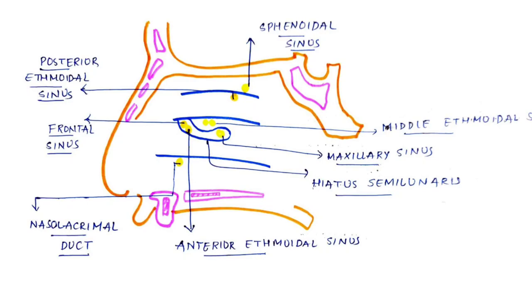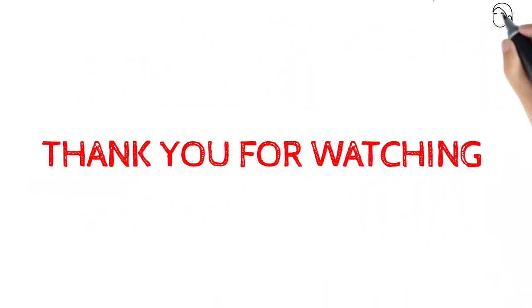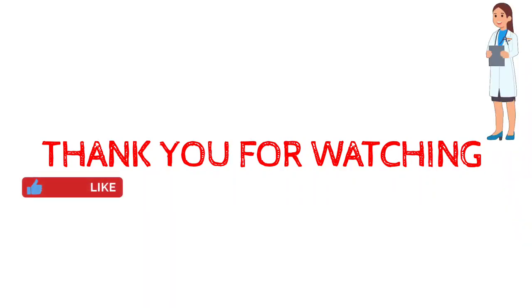The sphenoethmoidal recess is a fossa — a depression — present above the superior concha. It receives the opening of a very important sinus known as the sphenoidal air sinus. So the sphenoidal air sinus opens above the superior concha into the sphenoethmoidal recess, as you can see in the picture.